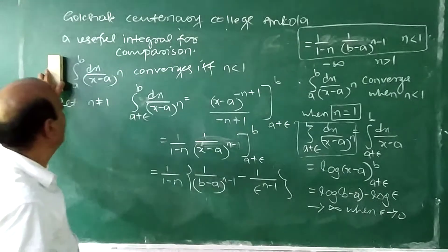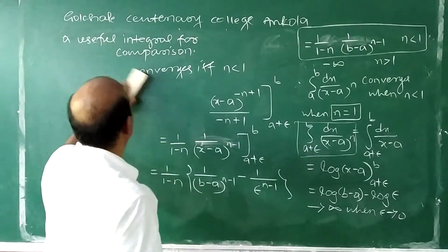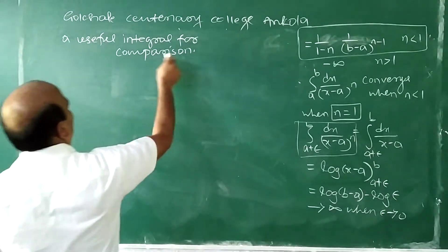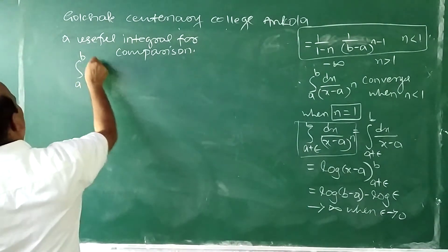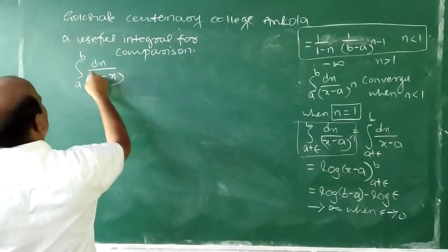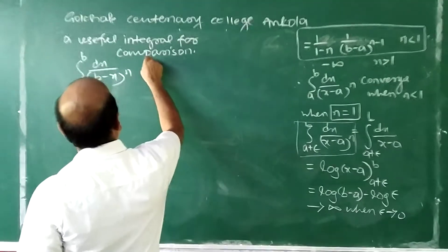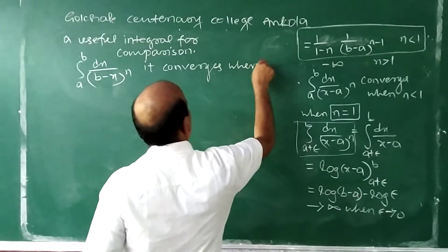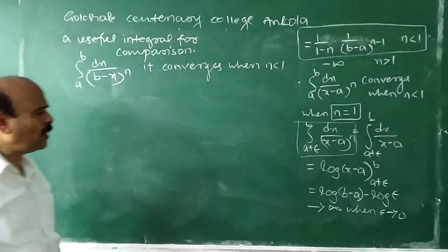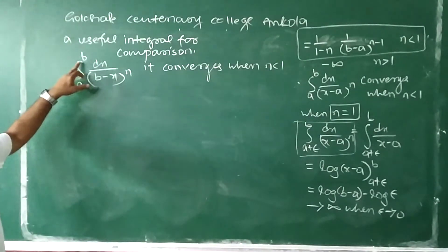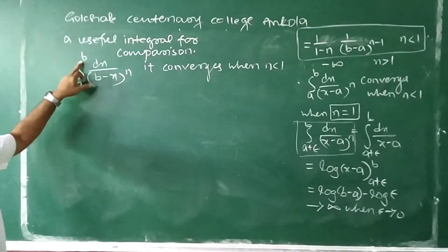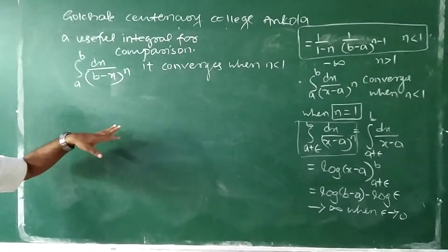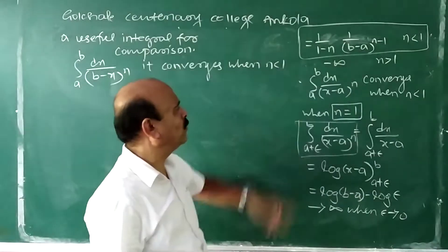This is a useful integral and you can see how we use it when solving problems. Another useful integral is ∫A to B dx/(B−x)^N, which also converges when N < 1. The proof is exactly similar. Here the point of discontinuity is B, at the right end, whereas the previous one converges at the left end. Both converge when N < 1.